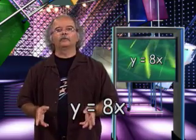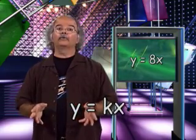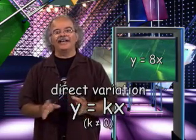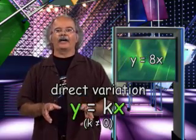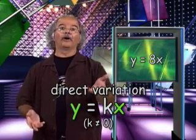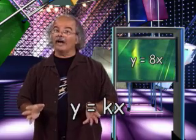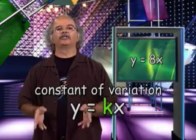This equation, y equals 8x, is an example of equations in the form y equals kx. Y equals kx describes what is known as direct variation. This is true when k is any number except zero. We say that y varies directly as x. As x changes, y changes. The more you work, the more you make. The change happens at a constant rate, indicated by the letter k, which is known as the constant of variation.